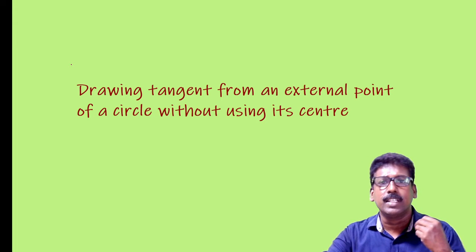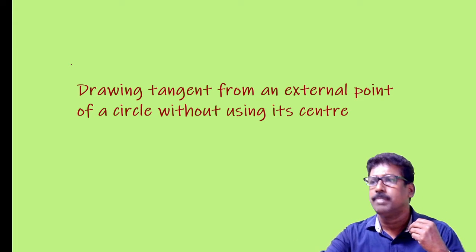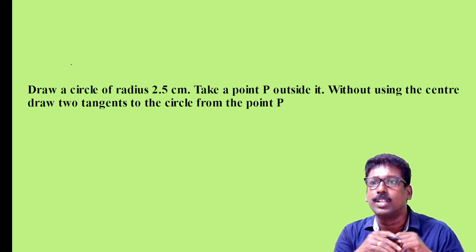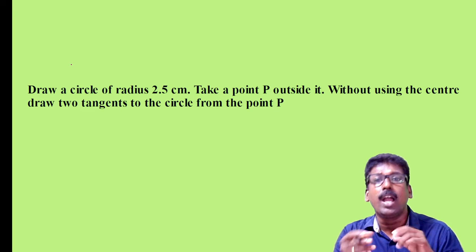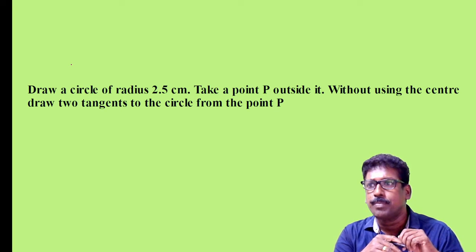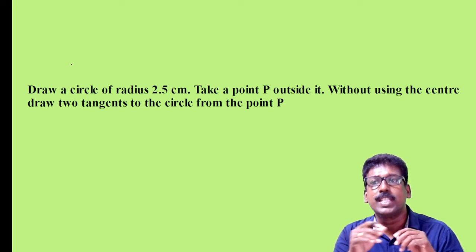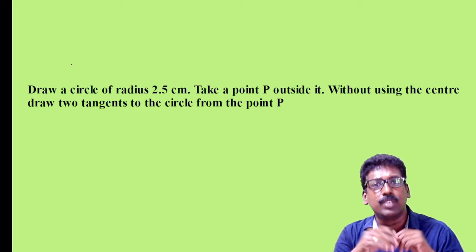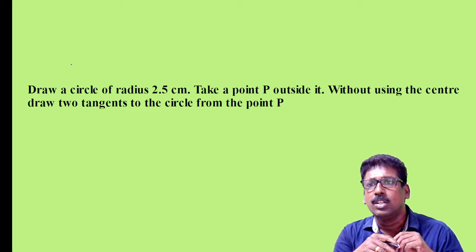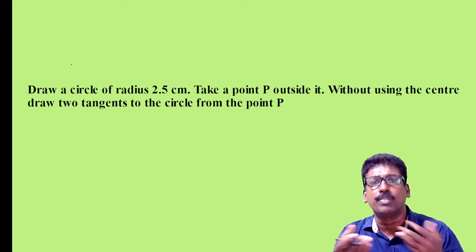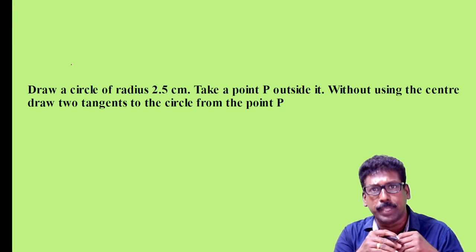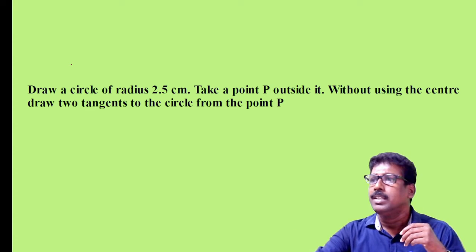Now let us take a question. Here is your question: draw a circle of radius 2.5 cm, take a point P outside it without using the center of the circle, and draw two tangents to the circle from this point P. Let us see how to draw it.